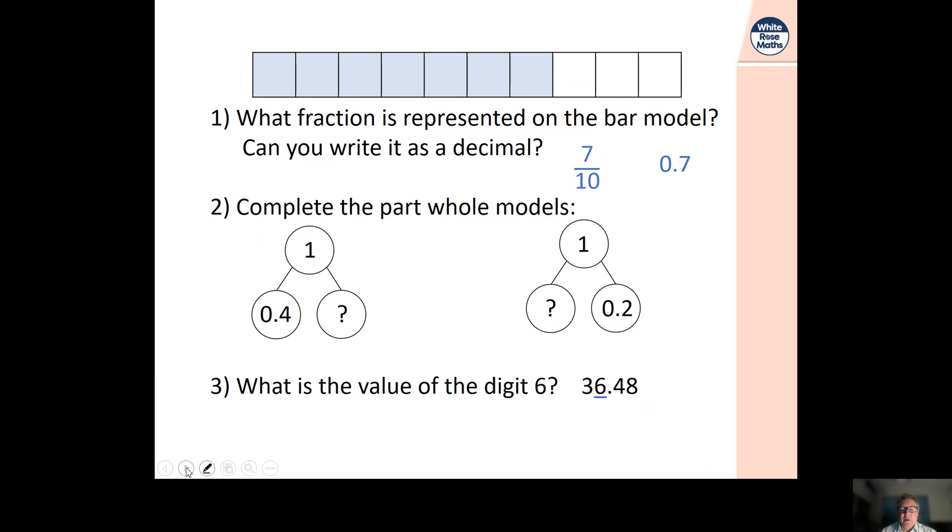0.7. So as we work up through the tenths: 0.1, 0.2, 0.3, 0.4, 0.5, 0.6, 0.7, 0.8, 0.9, all the way up to one. You could think about seven divided by 10. So that would mean this number would go that way, one place. That's another way of looking at it.